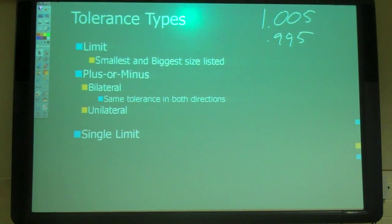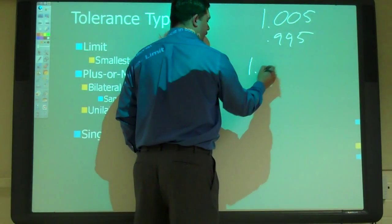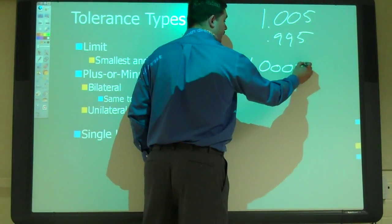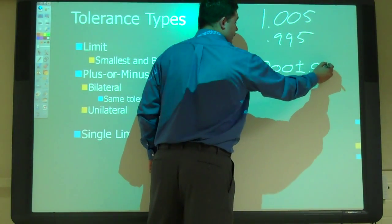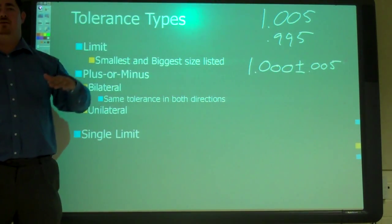A bilateral tolerance is we give it one number and it's plus or minus the same amount. So that was our 1.000 plus or minus 0.005. So that's bilateral. It's the same up as it is down.